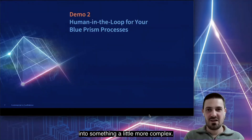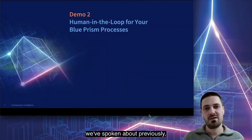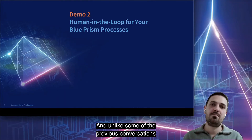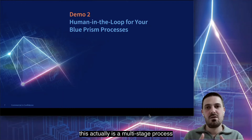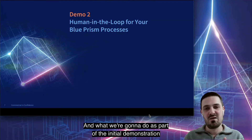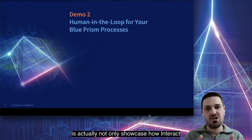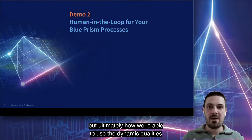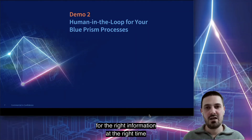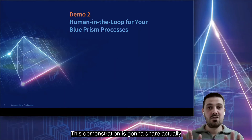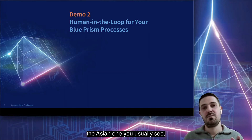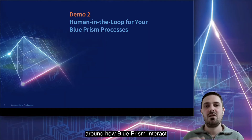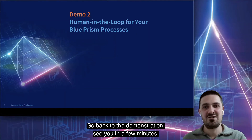What we're going to do now is jump into something a little more complex. This builds on the use cases we've spoken about and we're going to demonstrate a traditional industry use case around change of circumstance. This is a multi-stage process between a digital worker and a person. We're going to showcase how Interact can support fluid processes that jump between digital workers and people at multiple steps, and how we can use the dynamic qualities of the interface to prompt the user for the right information at the right time. The demonstration will show the digital worker on the right-hand side and the user interface on the left-hand side.